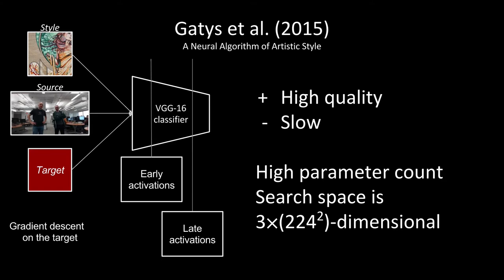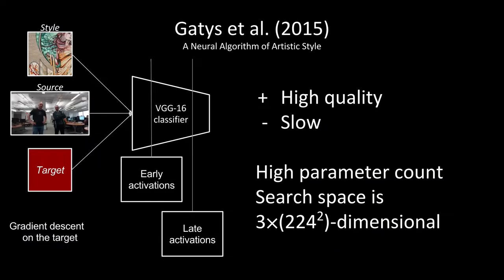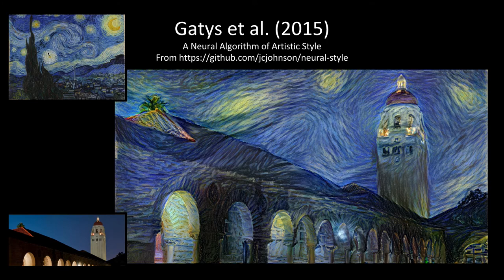Once those two loss functions are in place, we can do gradient descent on the target image and search through the space. The space is huge — for a 224×224 image it's super large. But it produces very high quality images. For example, the Stanford Building in the Starry Night style looks absolutely amazing — way better than what our demo does. But you need one or two days per image. Nice technique, not useful for real time.